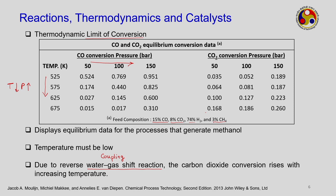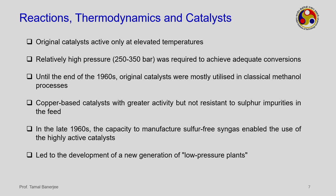Original catalysts were active only at elevated temperatures. To achieve adequate conversion they had to increase pressure to 250–350 bar. These were the classical methanol processes used until the end of the 1960s. Being active means the catalyst was made to convert CO at high temperature and pressure.